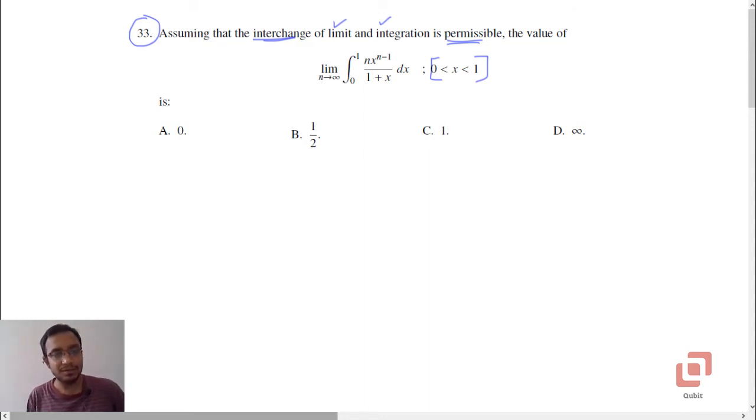Now we will make use of the information given in the problem, which is we can assume that interchanging the way we solve this sum is permissible. That is, even if we first take the limit and then integrate, the answer is not going to change.